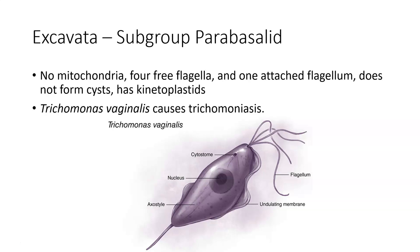The parabasalid group doesn't form cysts, and the kinetoplastids mentioned are modified mitochondria — so they still have something to help produce energy, but it's not a traditional mitochondria. The example here is Trichomonas vaginalis, which causes trichomoniasis, a vaginal STD. It's usually diagnosed in women because men tend to be more asymptomatic.